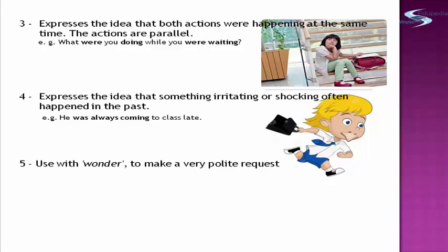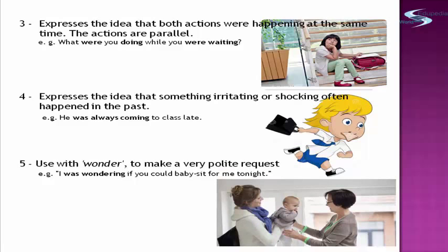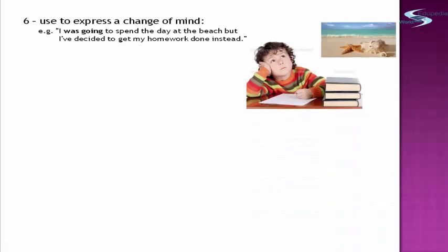Number five usage is that it is used with the word 'wonder' to make a very polite request. Example: 'I was wondering if you could babysit for me tonight.' 'Was wondering' is in the past progressive tense. The sixth usage is that it is used to express a change of mind. Example: 'I was going to spend the day at the beach, but I've decided to get my homework done instead.' So, it is a change of mind.